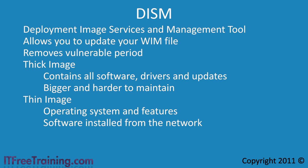The last type is a hybrid image. Hybrid images are somewhere between a thick and thin image. For example, in a hybrid image, software is installed on its first run. When a user attempts to open a Word document, this would trigger Microsoft Office to be installed. This does mean the user will have to wait for the software to be installed before they can start using it. When thinking about what type of image you want, consider the size of the image and also the time taken to apply updates and install software that is not on the image after it is deployed.